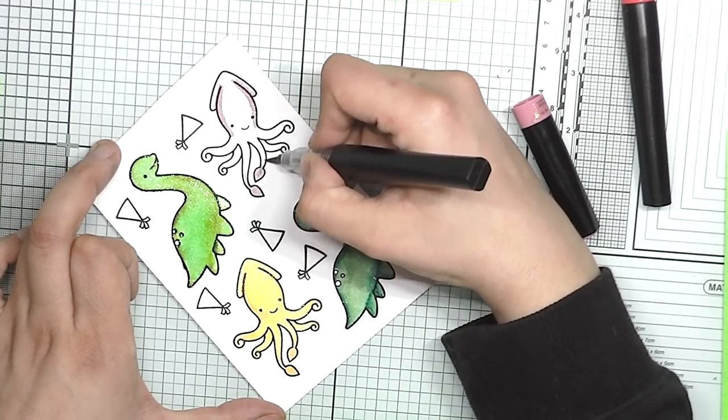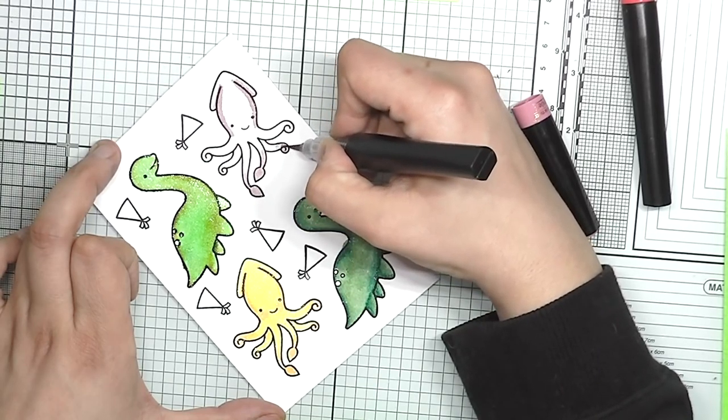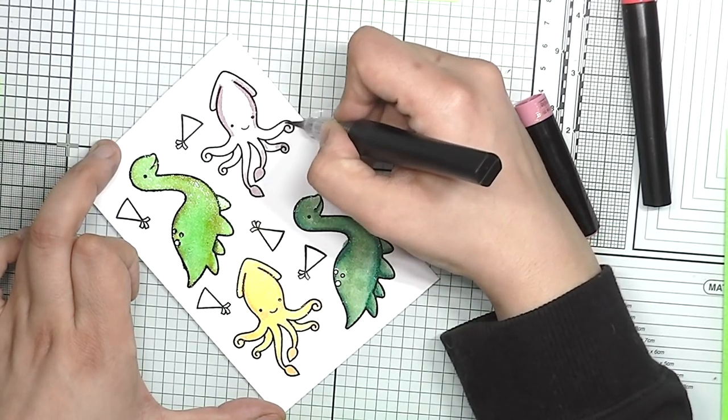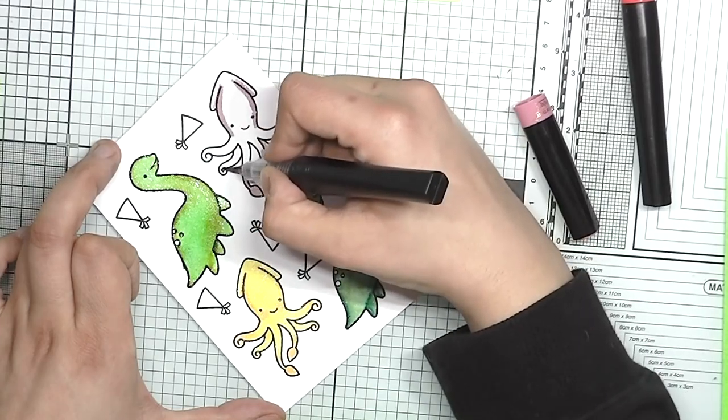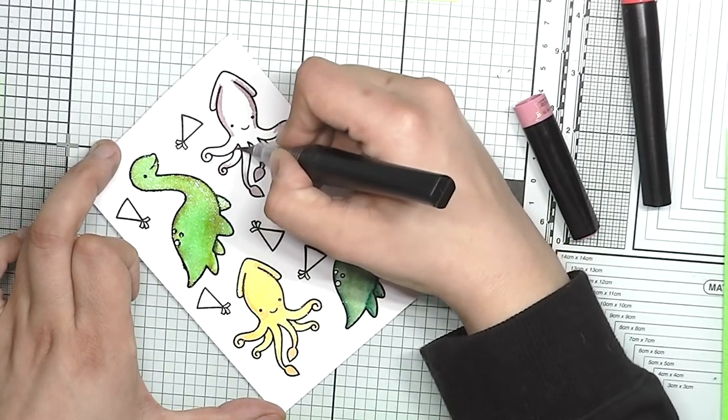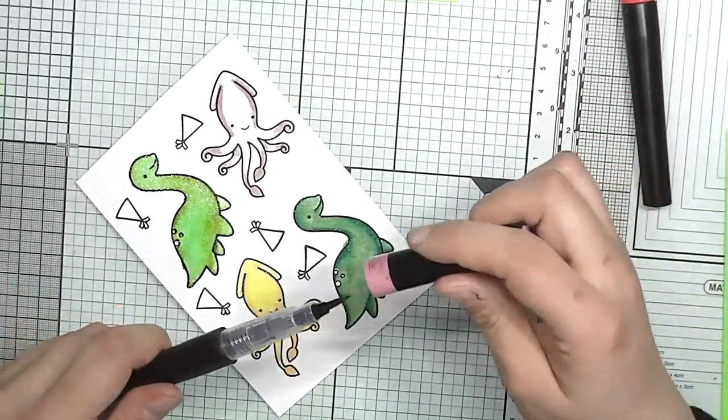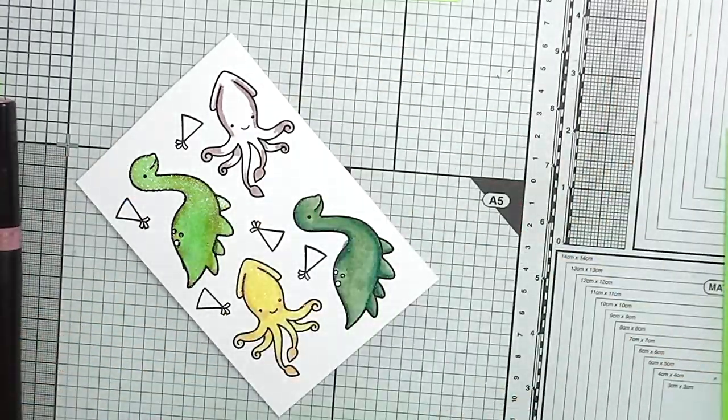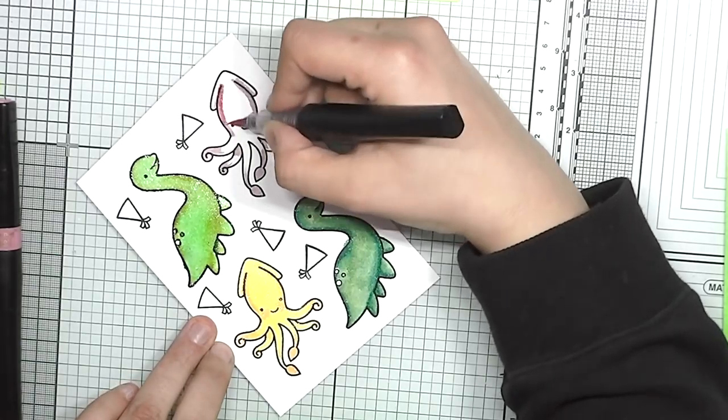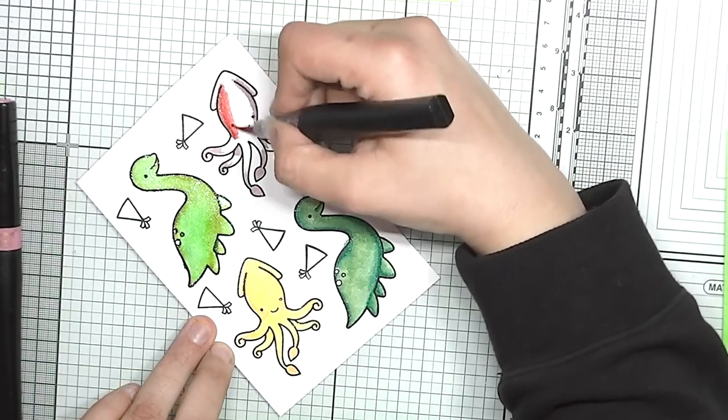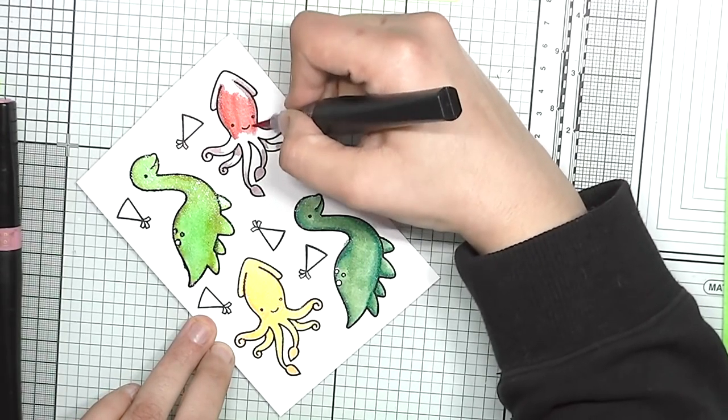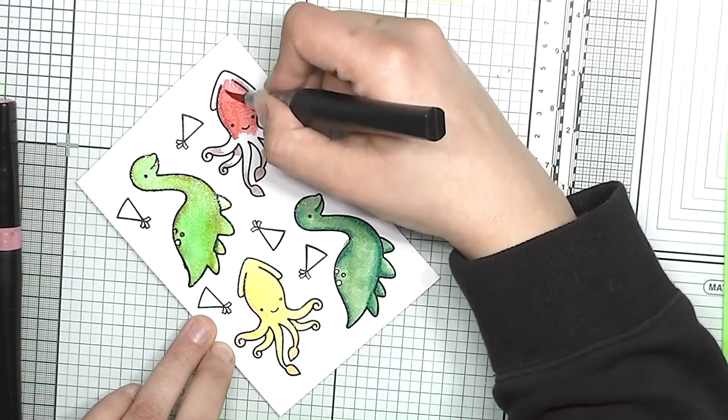And I don't color very nicely because I'm going to cut them out, so if something gets outside of the lines it doesn't really matter because I will cut it off later. And I also sped up this video, so it's twice the speed that I'm coloring, so I'm not this fast.